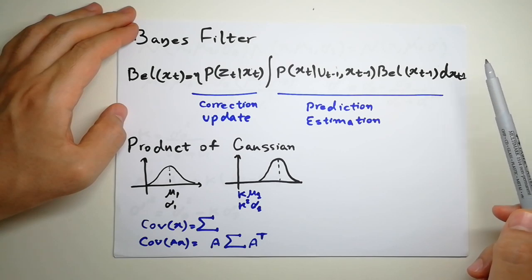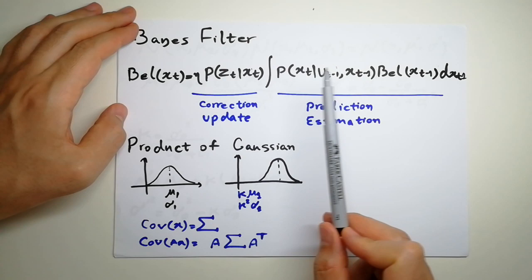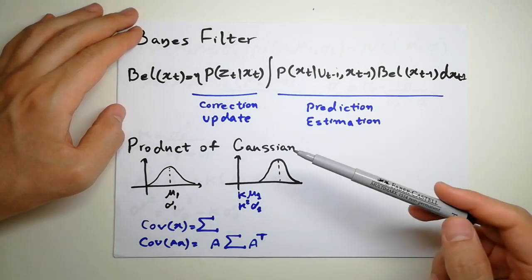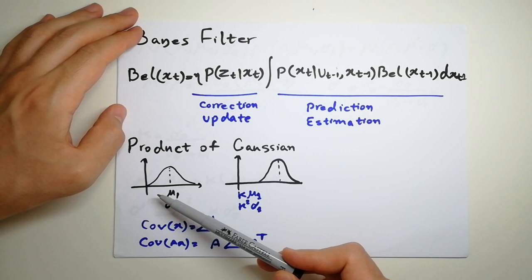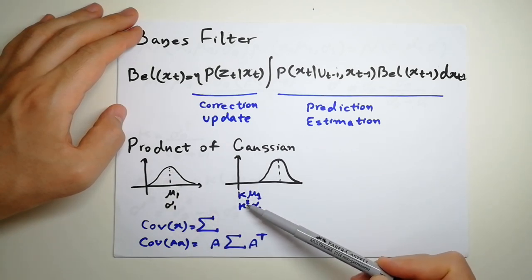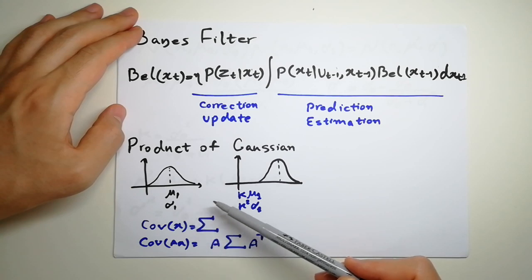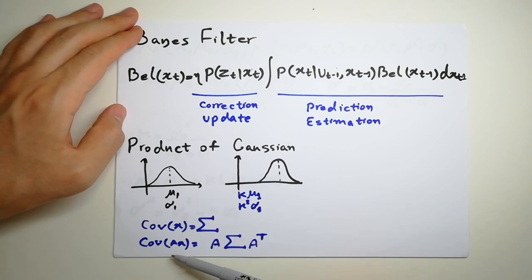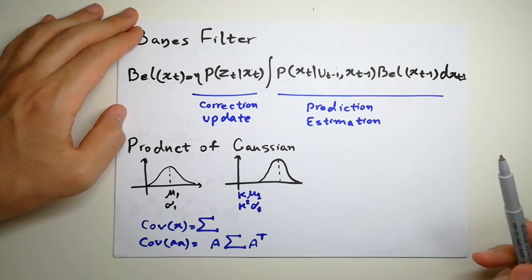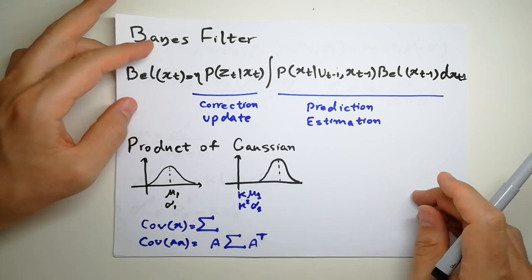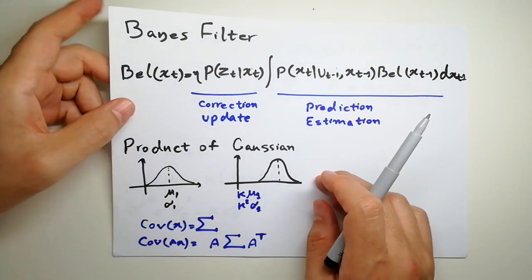So we are actually multiplying two Gaussians, and we're interested to see the result. The product of two Gaussians is again another Gaussian. What are the mean and covariance of the new Gaussian based on these two? We know that if we multiply a Gaussian by a number, the new mean is going to be k times the mean, and the new variance is going to be k squared. If it's n-dimensional data, you have to multiply by a vector.